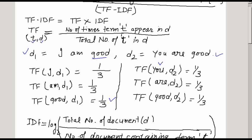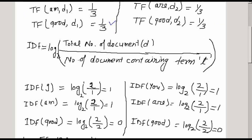In that way we can calculate the term frequency for each term appearing in a particular document. To calculate the inverse document frequency, which is IDF, it is calculated for each term T using the formula: log base 2 of the total number of documents divided by the number of documents containing term T.